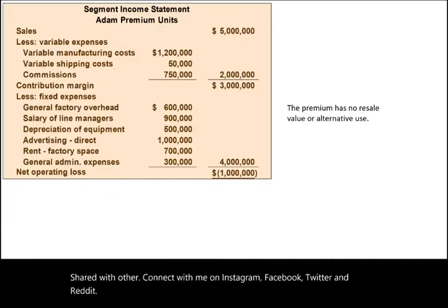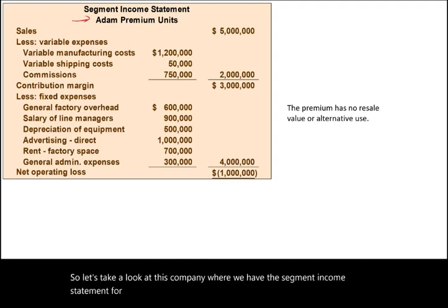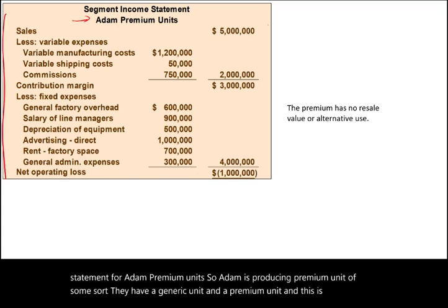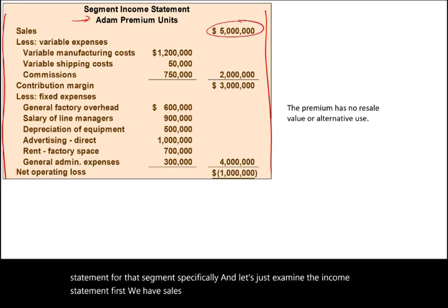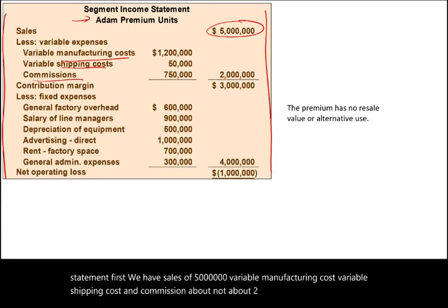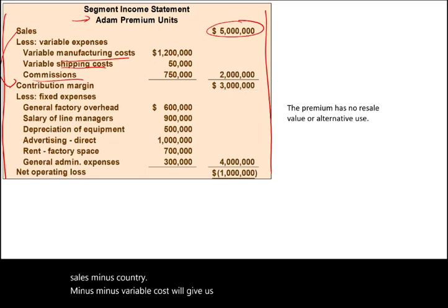Let's look at the segment income statement for Adam's premium units. Adam produces a generic unit and a premium unit, and this is the income statement for the premium segment specifically. We have sales of $5 million, variable manufacturing cost, variable shipping cost, and commissions — about $2 million in total variable cost. Sales minus variable cost gives us a contribution margin of $3 million.